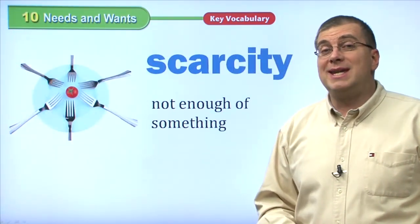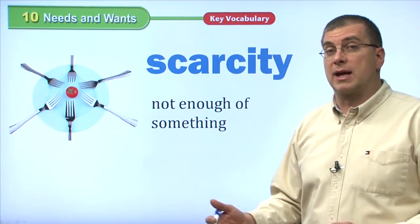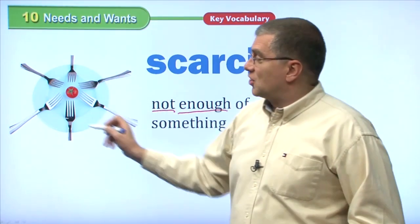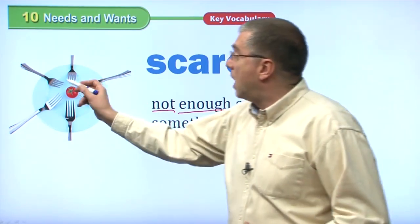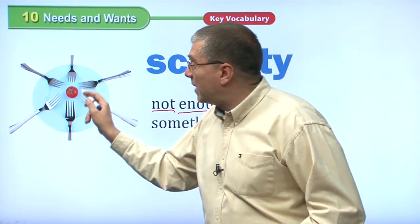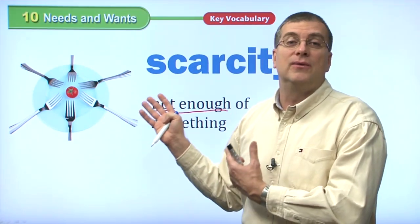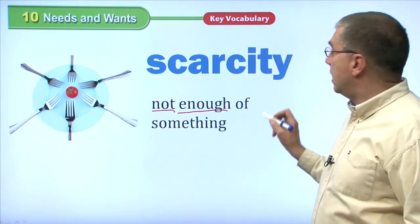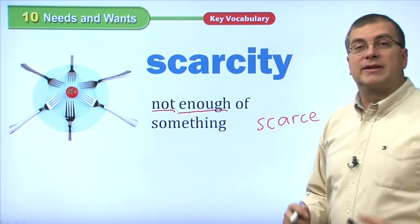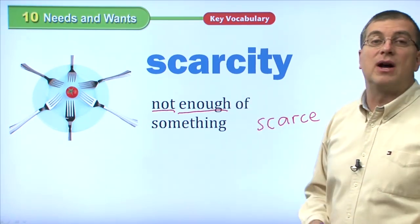When we talk about needs and wants, we can also talk about this word: scarcity. There is a scarcity of something. Scarcity means not enough — not enough of something. Look at this picture. Imagine many people are coming to dinner — six people want to eat dinner, but they only have one small tomato. That's not enough. There's a scarcity of food. Scarcity is a noun, but we can also use it as an adjective: scarce. Scarce means there's not enough. So, scarcity means not enough of something.